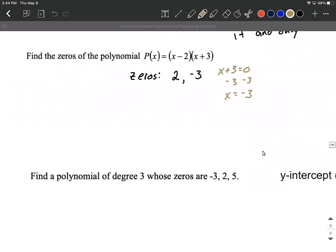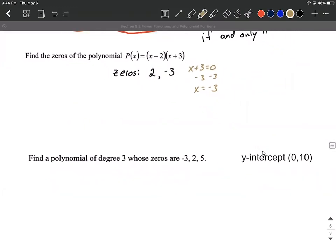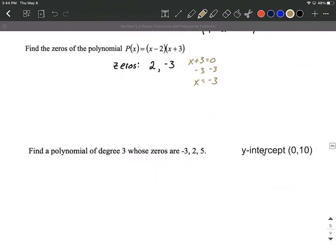All right very similar problem on this next one but it's kind of working the opposite direction. We're given zeros this time and told that it has to be a degree three polynomial and we want to come up with the polynomial. I'm also going ahead and including this extra piece of information that we know the y-intercept is going to be at zero comma ten.